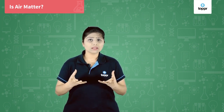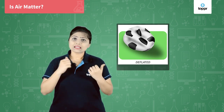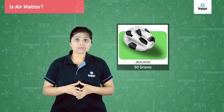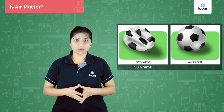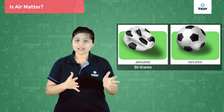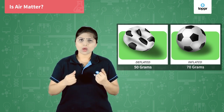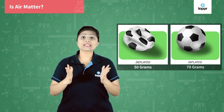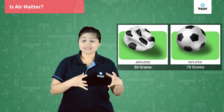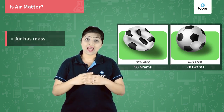But is air matter? It is present around you. But have you ever thought whether it has mass or it occupies space? Let's check that out. We take a deflated football. This football weighs somewhere around 50 grams. Now let's blow the football. As we blow the football and check the mass again, we find that it is weighing somewhere around 70 grams. How did the mass increase? Did the football have lunch? No, it was just blown with air. Air is present inside the football, due to which the mass of the football increased. This indicates that air has mass.